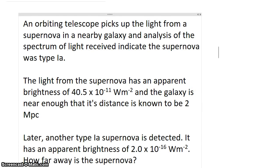The light from the supernova that we measure on Earth has an apparent brightness of 40.5 × 10^-11 watts per square meter. And the galaxy is near enough that, through other methods, we were already able to tell that the galaxy must have been 2 megaparsecs away.